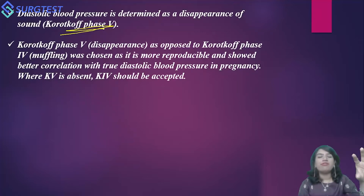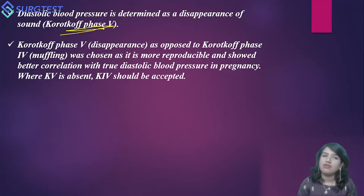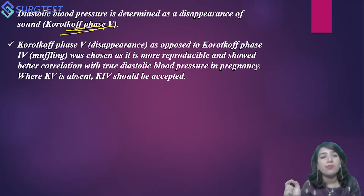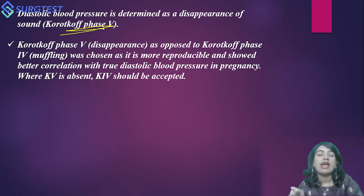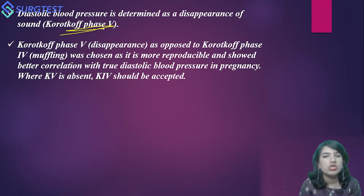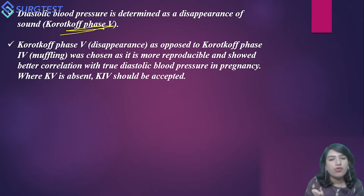Korotkoff phase 5 — disappearance — was chosen over Korotkoff phase 4 — muffling — because muffling is a subjective finding. Disappearance is more objective and shows a better correlation with true diastolic blood pressure in pregnancy. When Korotkoff 5 is absent, such as in states of hyperdynamic circulation where sounds continue right up to 0 mmHg, Korotkoff 4 should be accepted because Korotkoff 5 is not present.